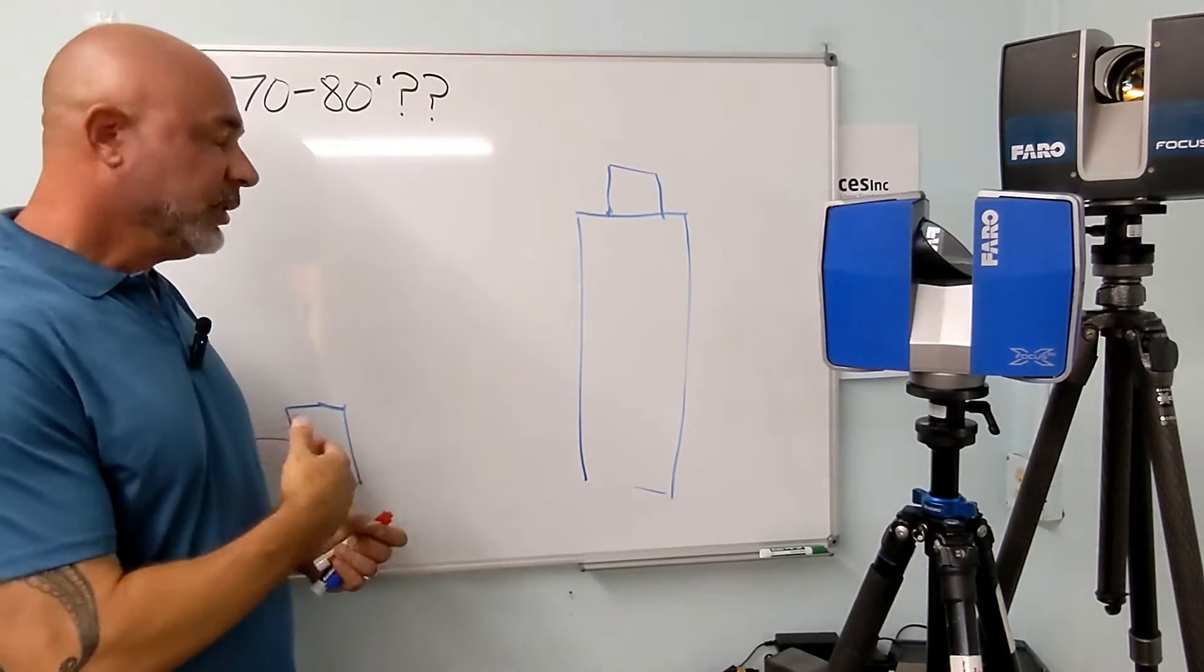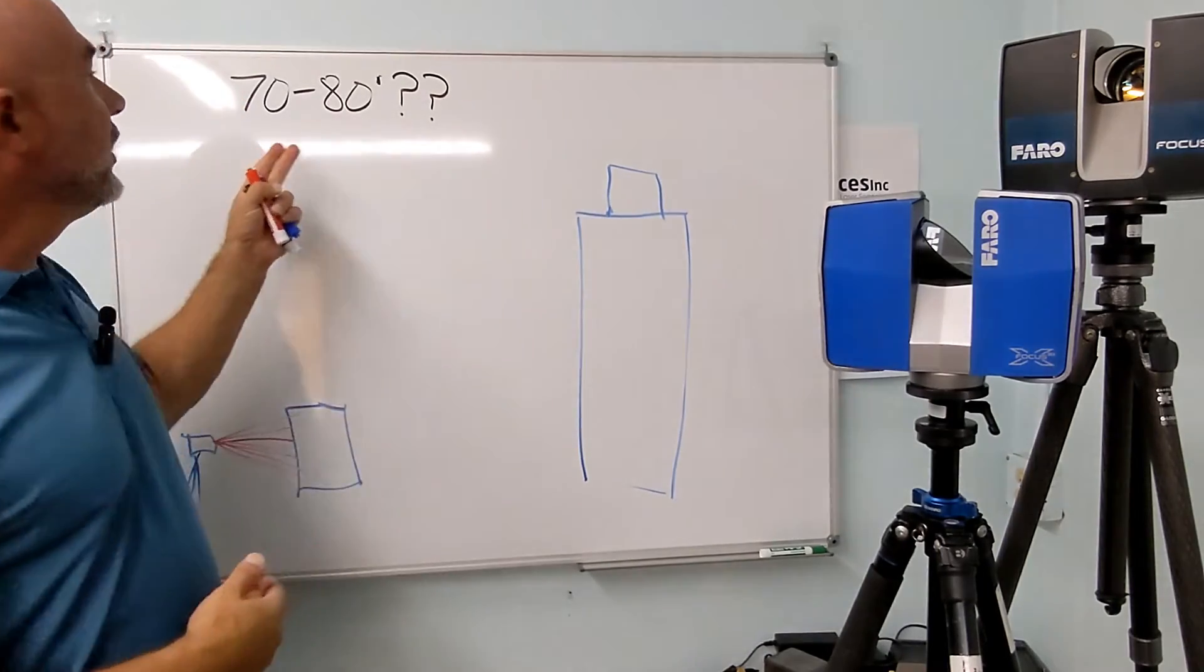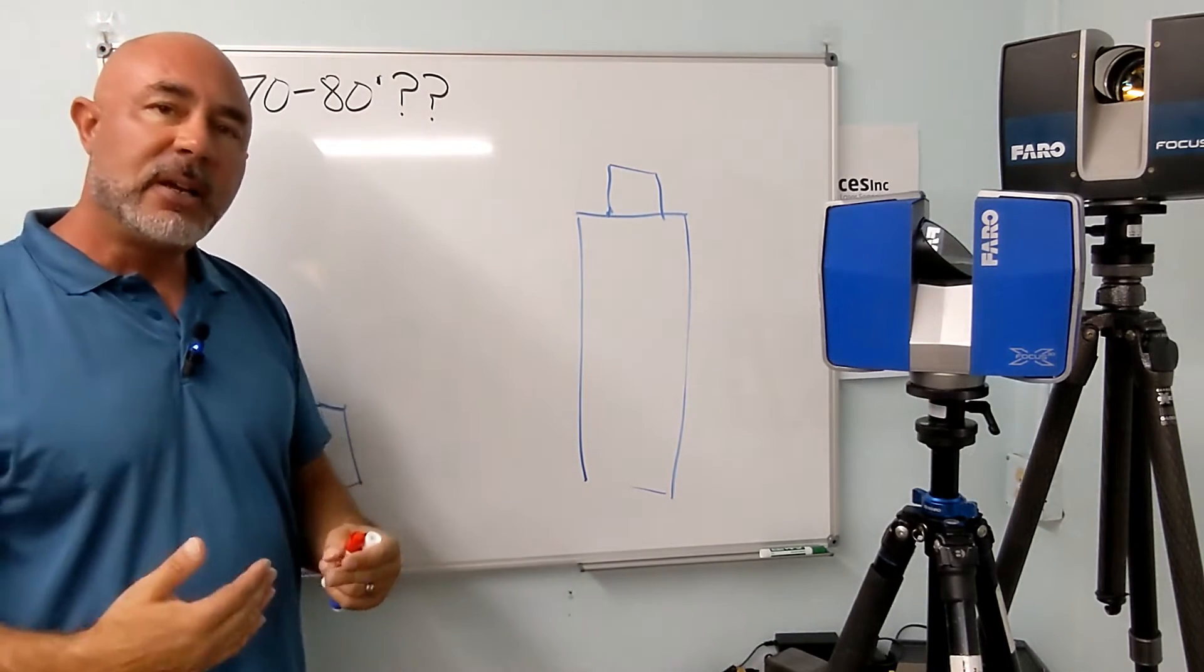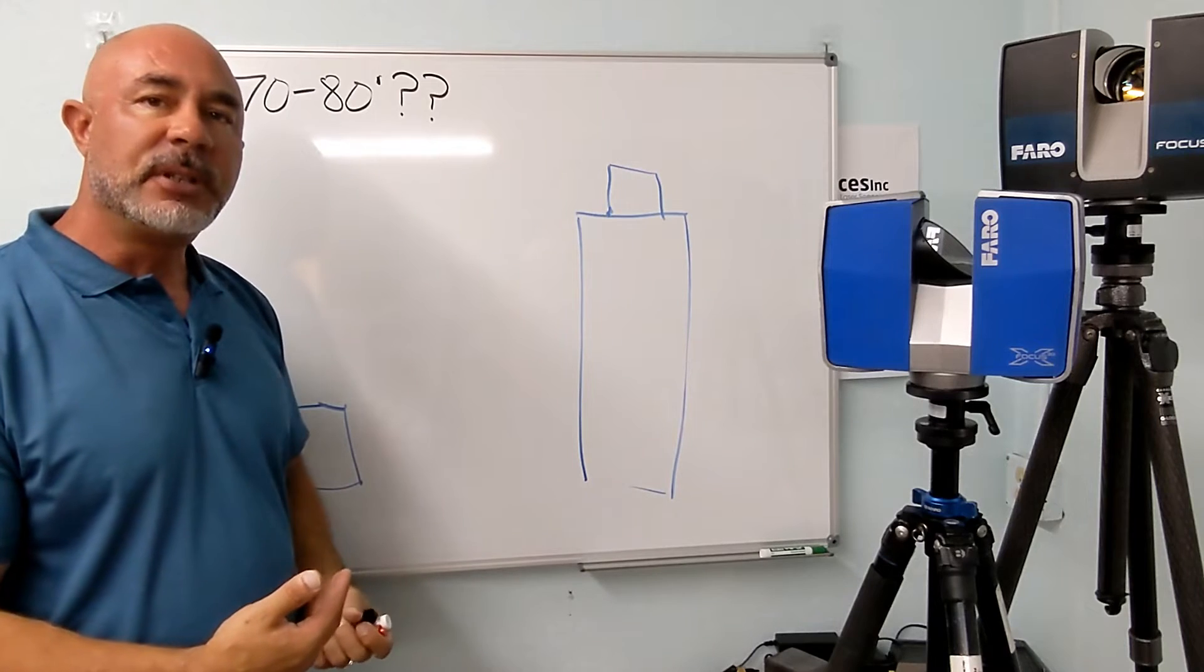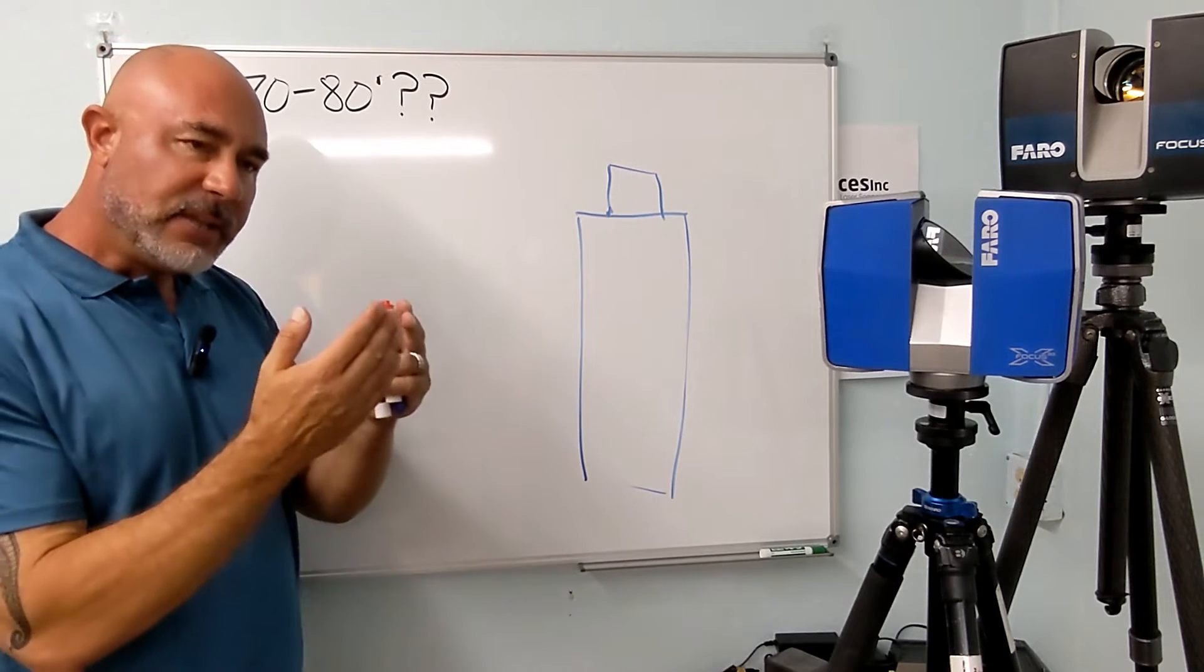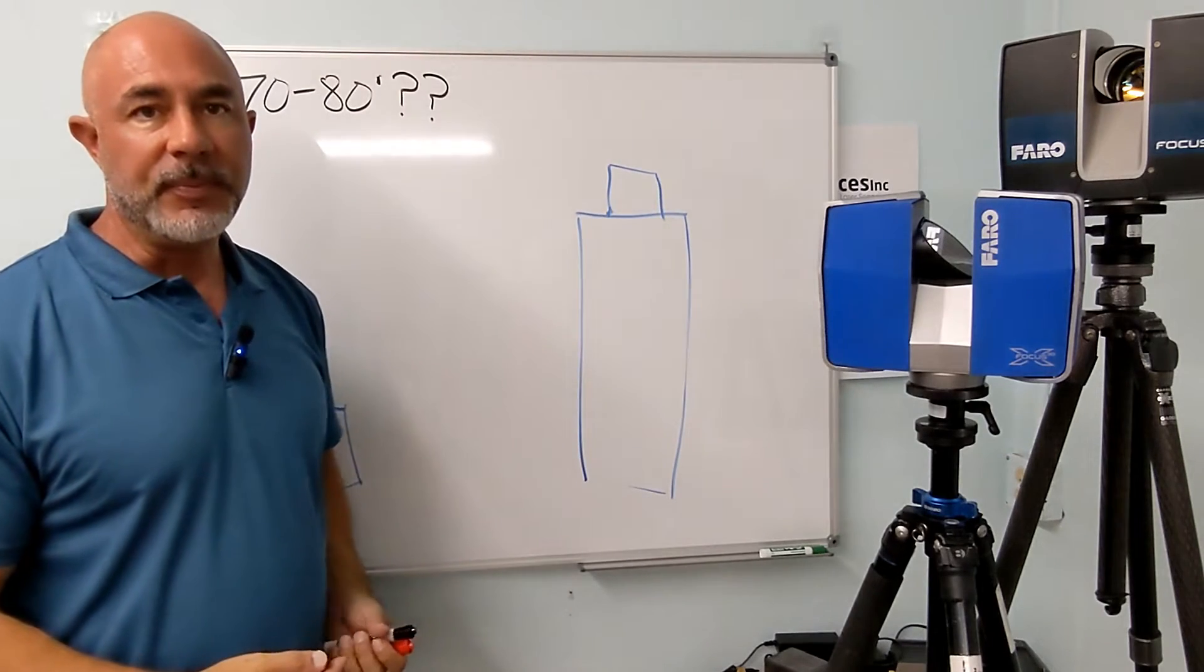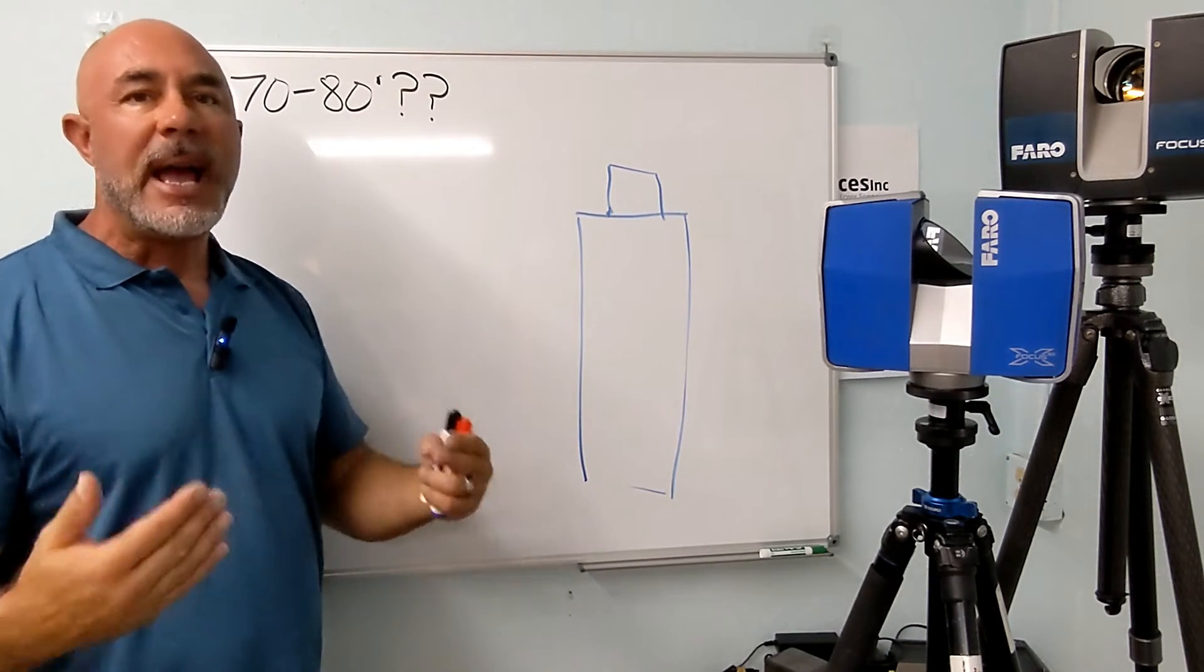When you've got your scanner within the 70 to 80 feet with the correct settings, the points from the scanner are going to land on the surface of the object that you're scanning and they're going to land two to five millimeters apart, one to four millimeters apart. That's your accuracy.